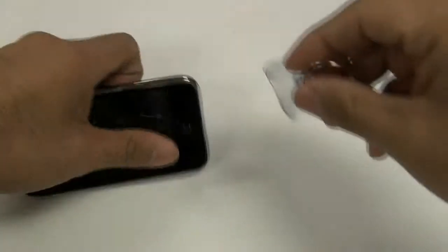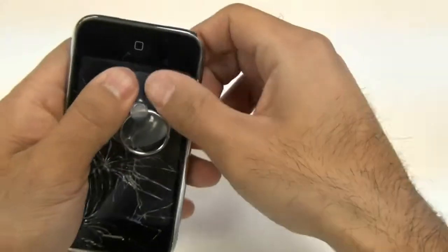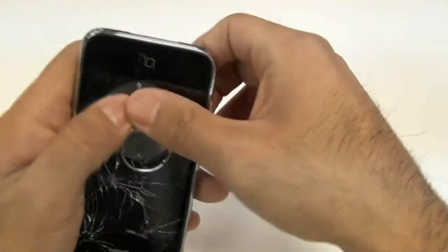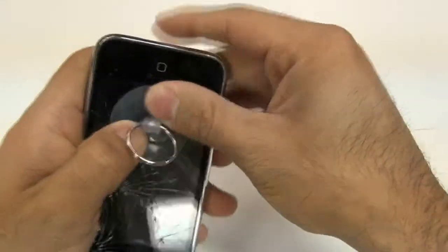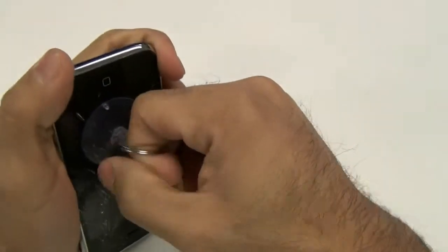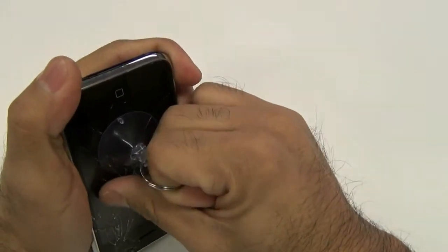Next, using a suction cup, you will want to place a suction cup on the screen. If your screen is cracked, you might want to use a piece of tape to cover the cracks or the glass so that you get a good suction on the screen and pull up away from the screen.